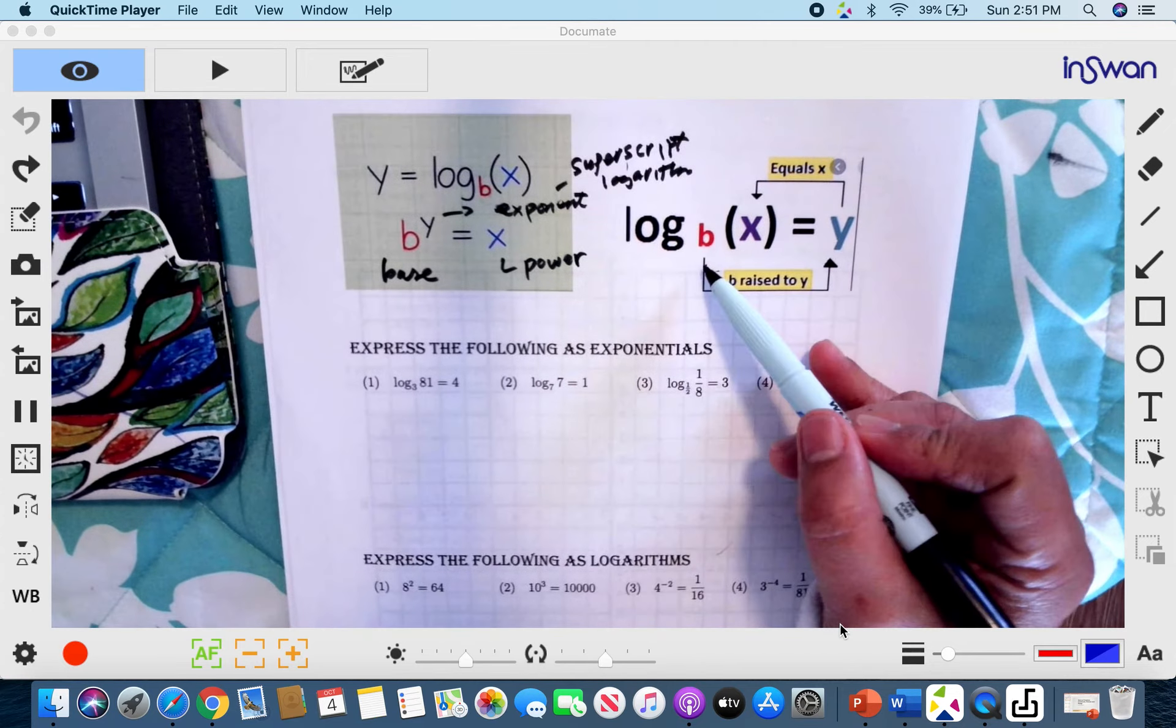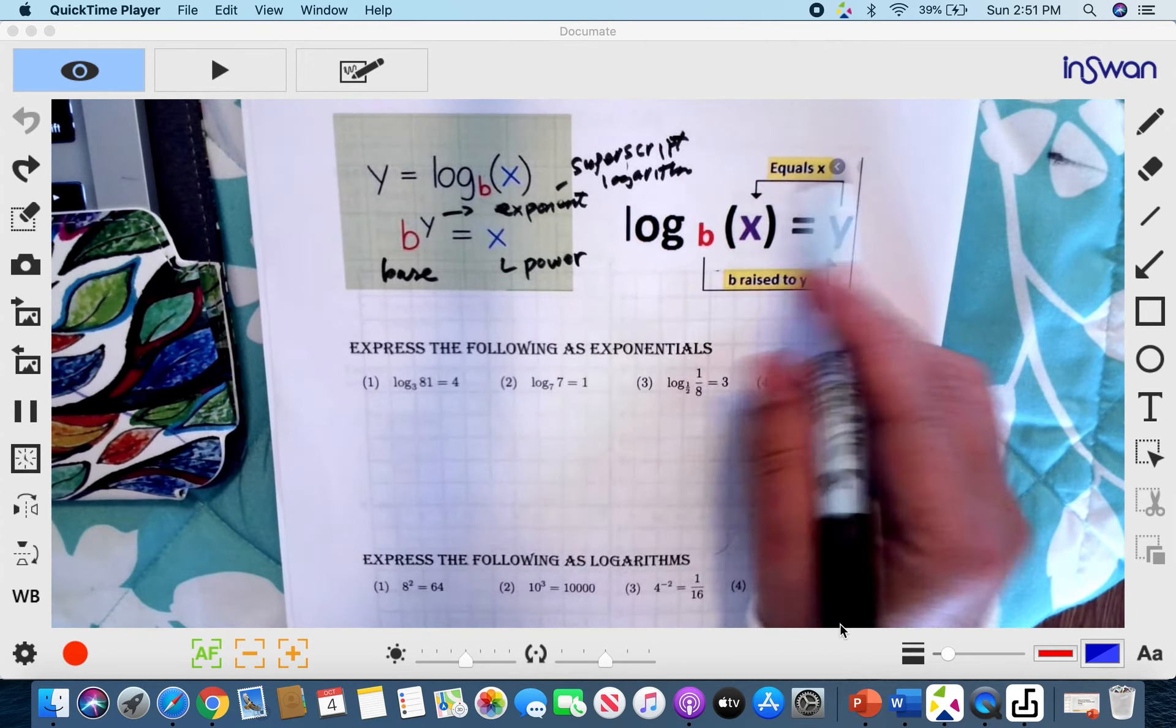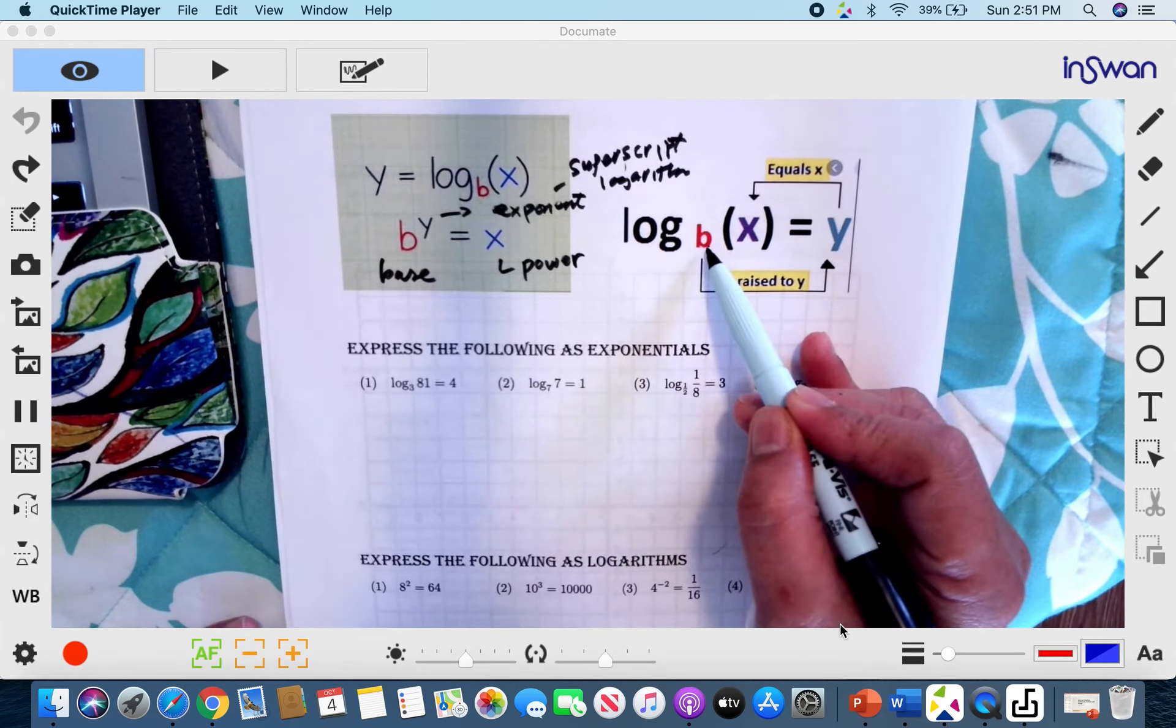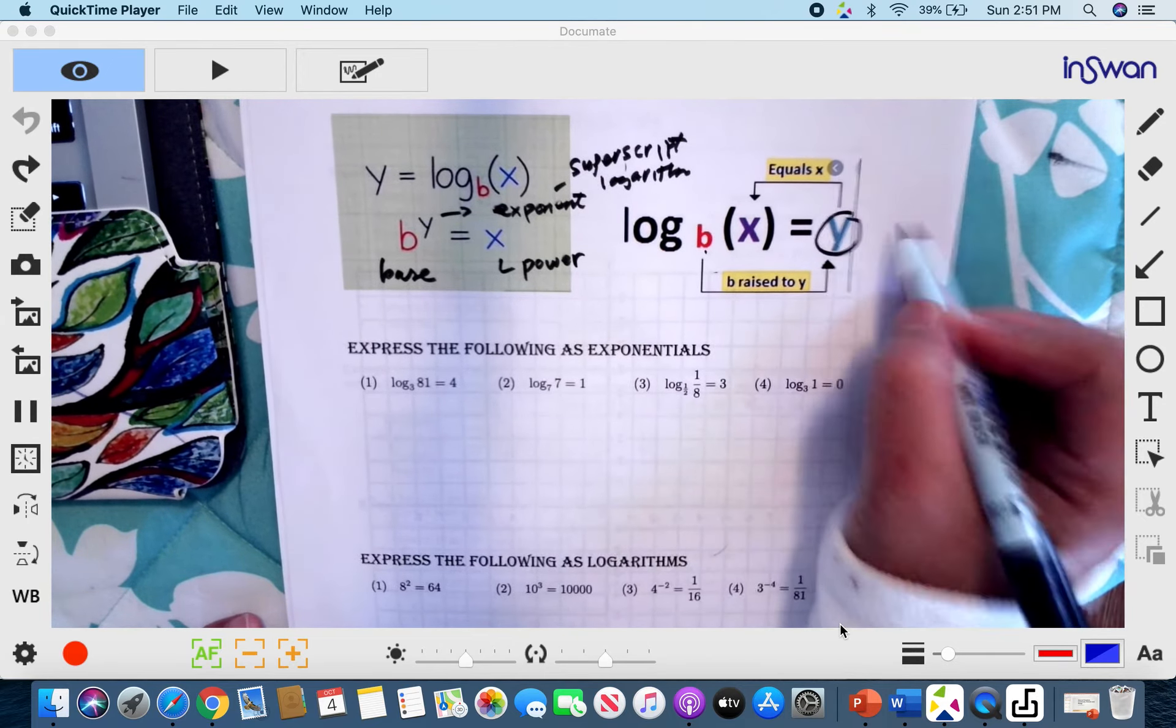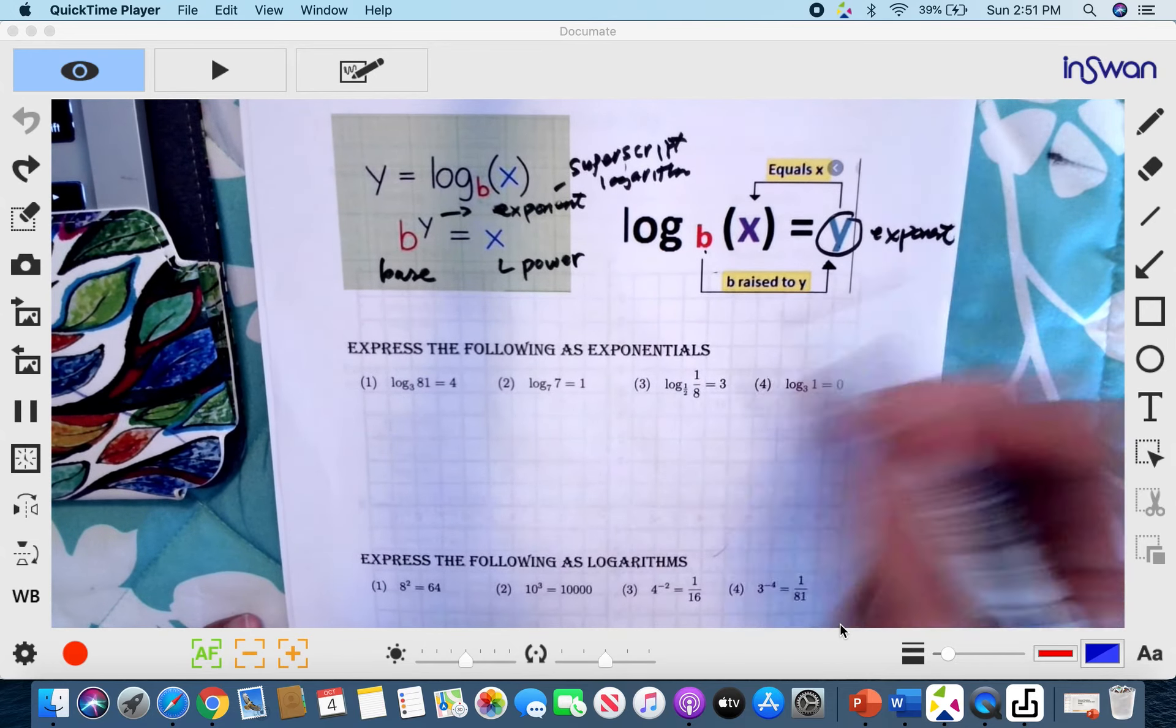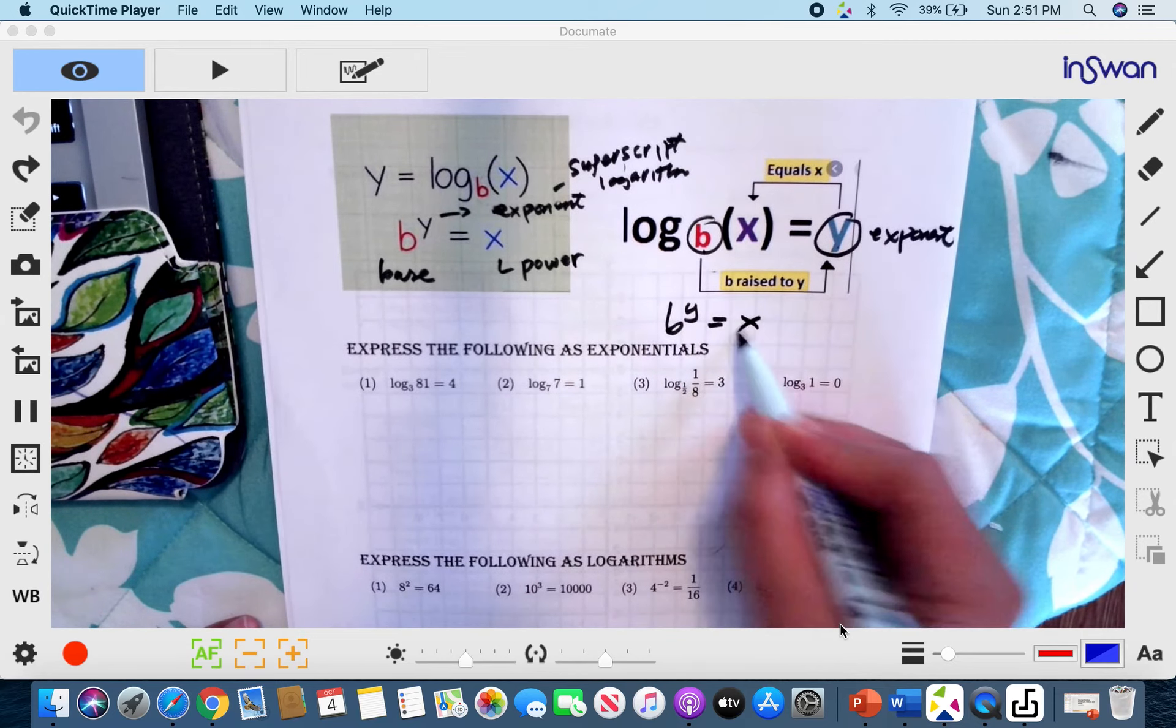So as you can see, if you're going to express it conversely, from logarithm to exponent, so you have logarithm of x base b equals y, your y is your logarithm. So therefore, this is your exponent. And of course, your base is b. So that's b raised to y is equal to x,